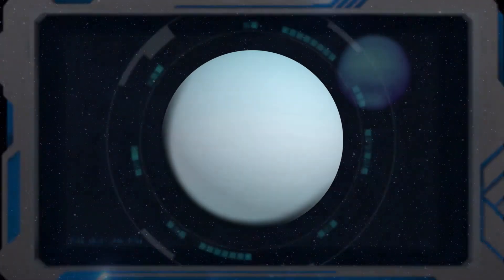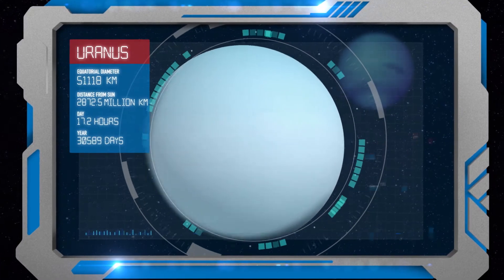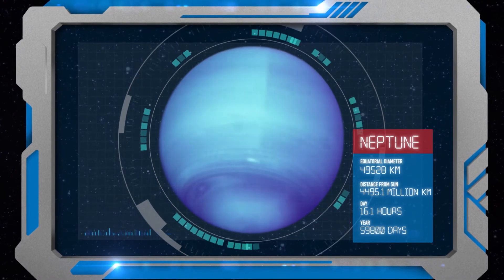Further out, Uranus and Neptune are spinning blue giants with freezing surfaces and super fast winds.